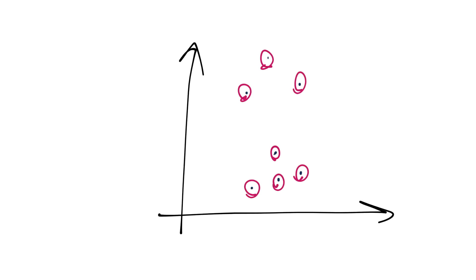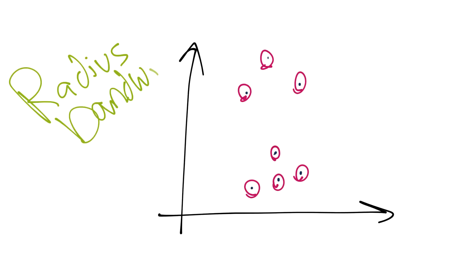So you've got all of these as cluster centers. Mean shift has one parameter that the scientist might supply — though I'll show you a way to determine it automatically — and that is called the radius, also sometimes referred to as the bandwidth. Basically what's going to happen is you're going to have a radius around each data point, and this applies to every single data point.